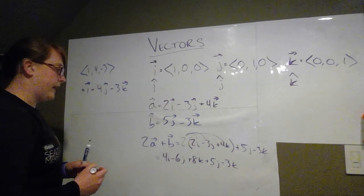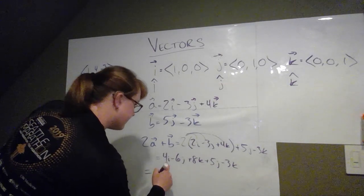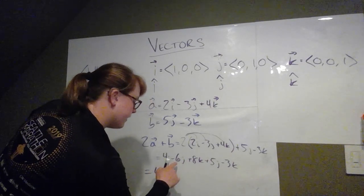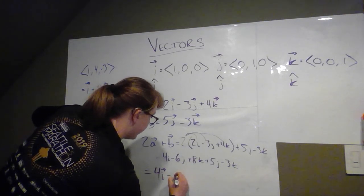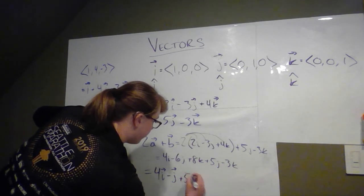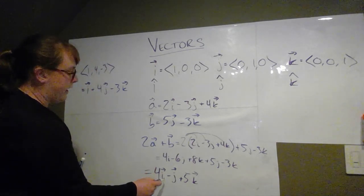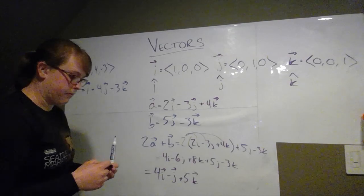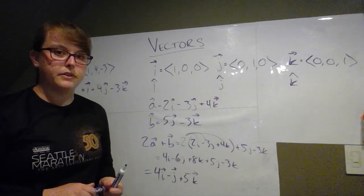So then we would combine like terms and we would get, let's see, 4i is the only i, negative 6 and 5 would just give us minus j, and then 8 minus 3 is 5k. So our new vector would be 4i minus j plus 5k. So that's what 2a plus b would be. Okay, so that's another kind of problem that we want to be able to do.